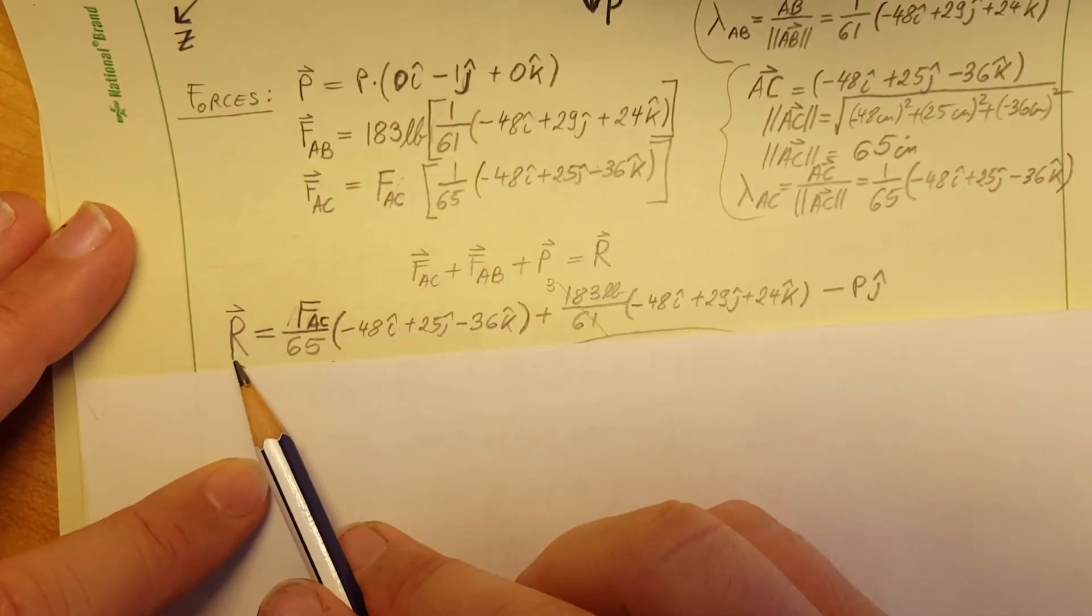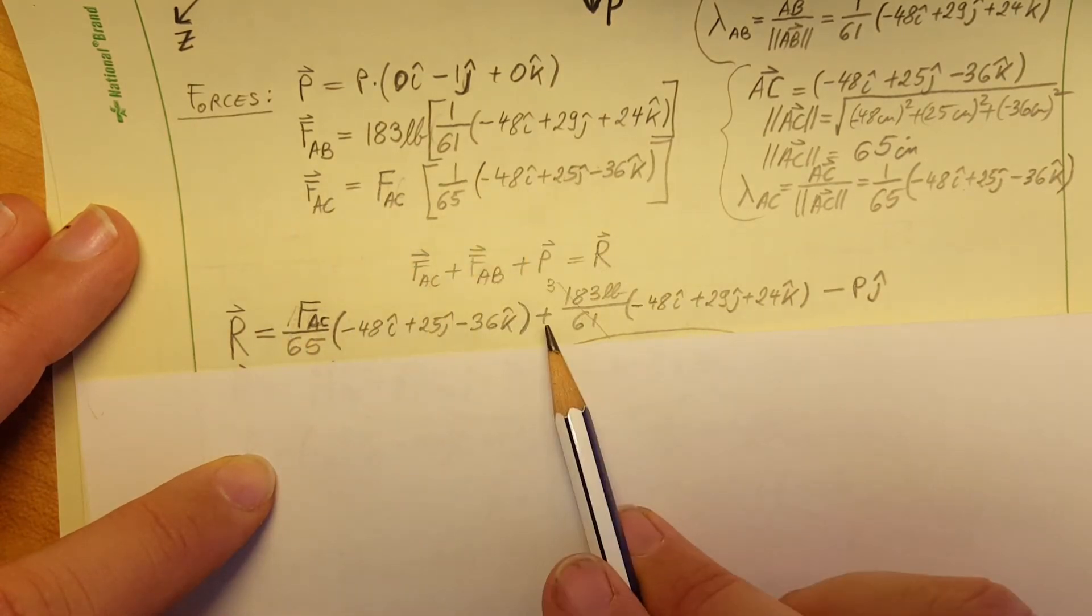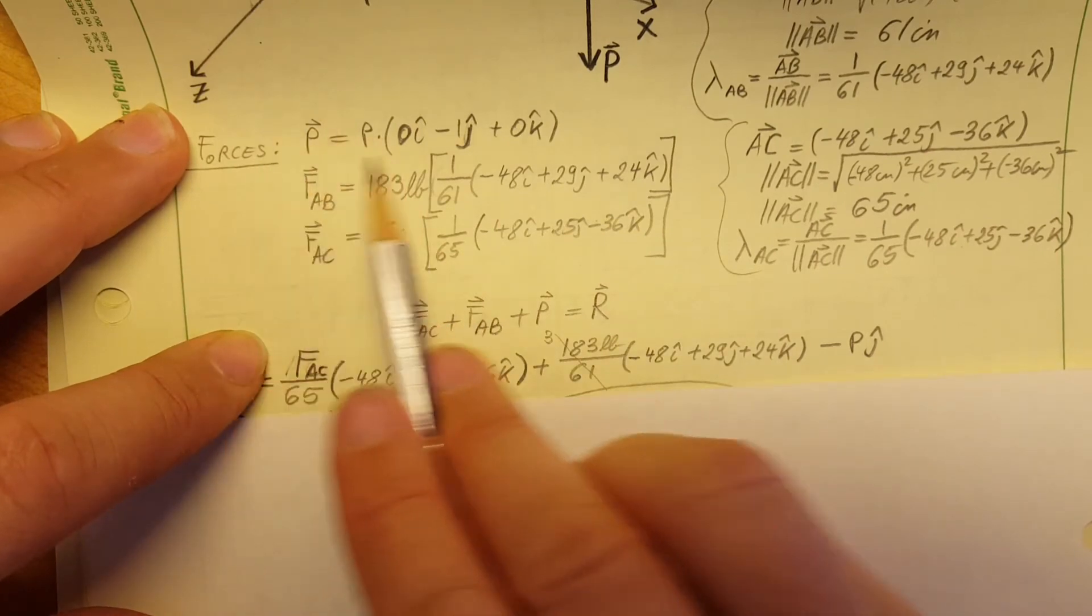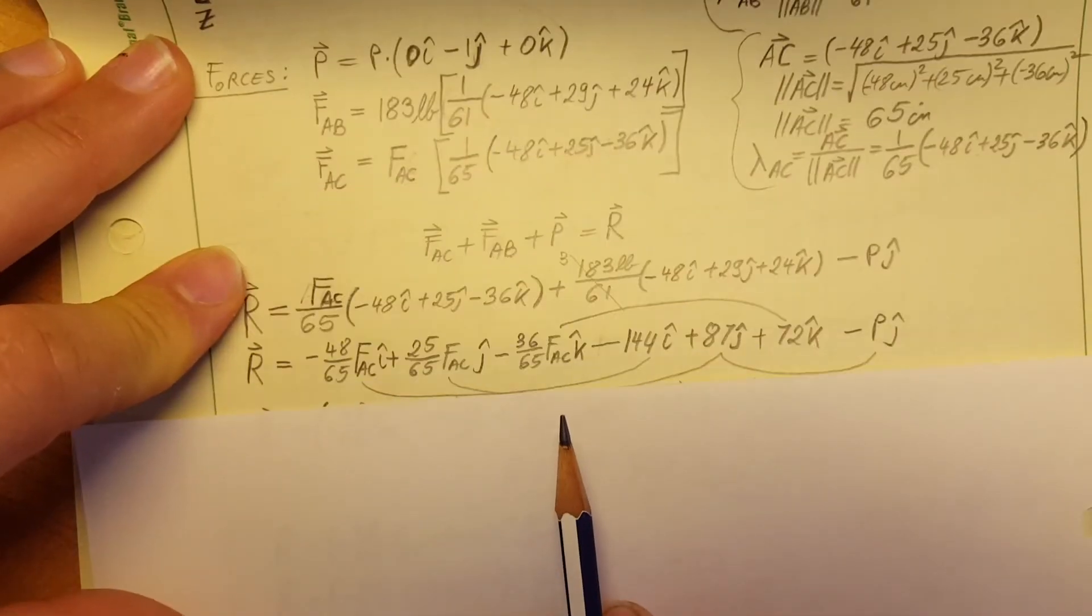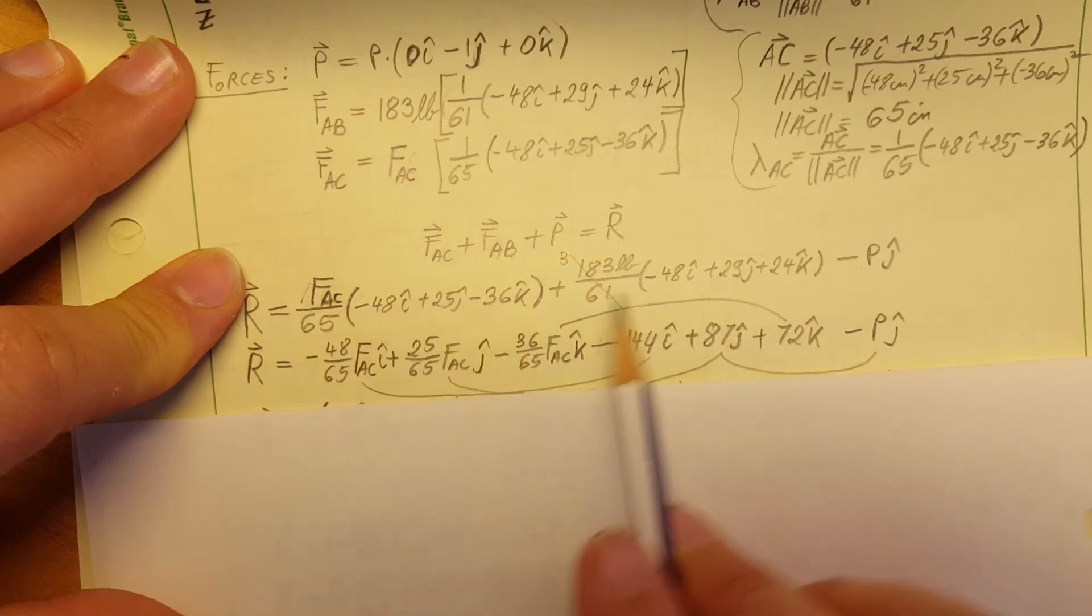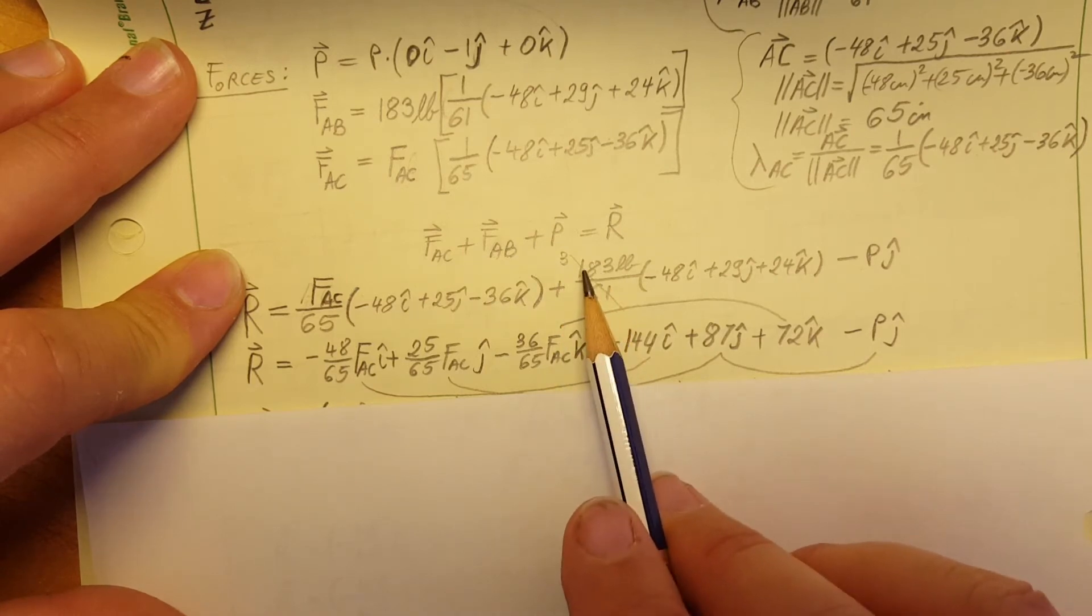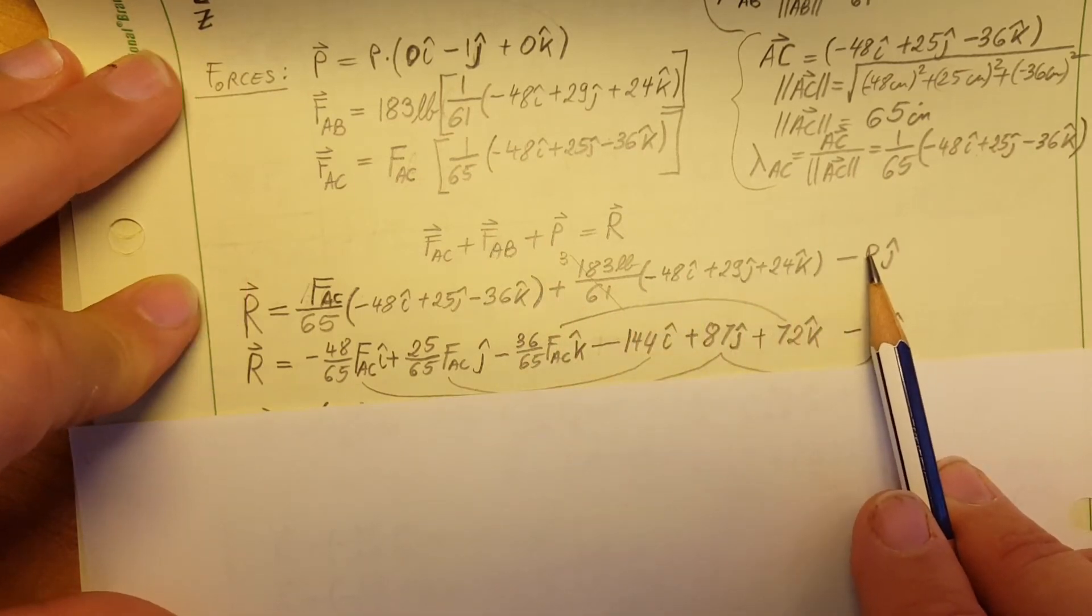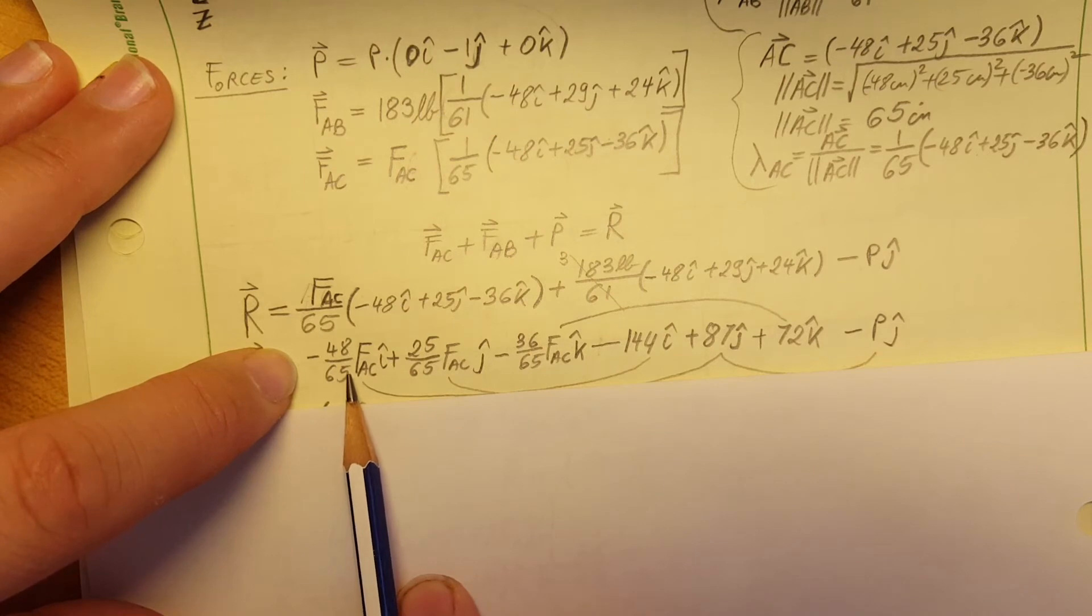We're gonna take our resultant equal to the force of AC plus force of AB from here plus the force of P. This negative comes from when we plug it in. We plugged it in. Now I'm gonna multiply it into every single term, this one as well. Over here we can simplify by 3: the 183 divided by 61 equals 3. We multiply it into each term and our P, write it out nicely each term.